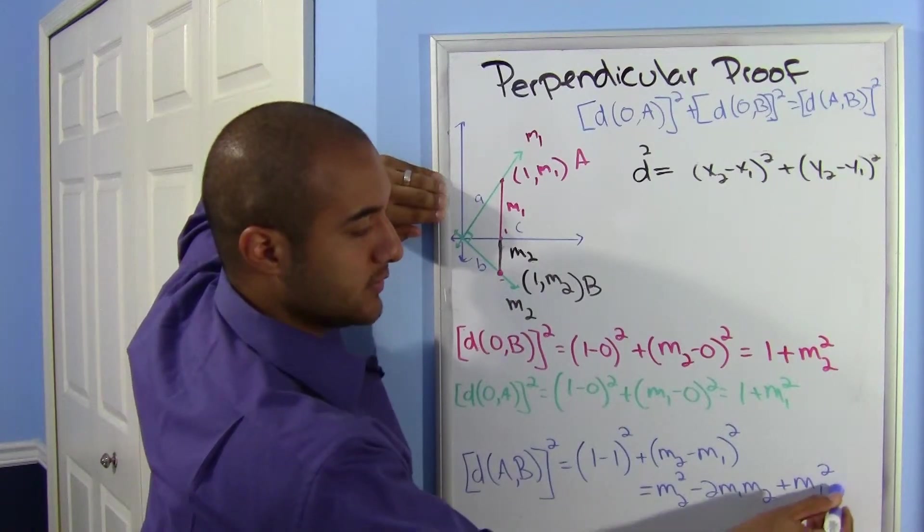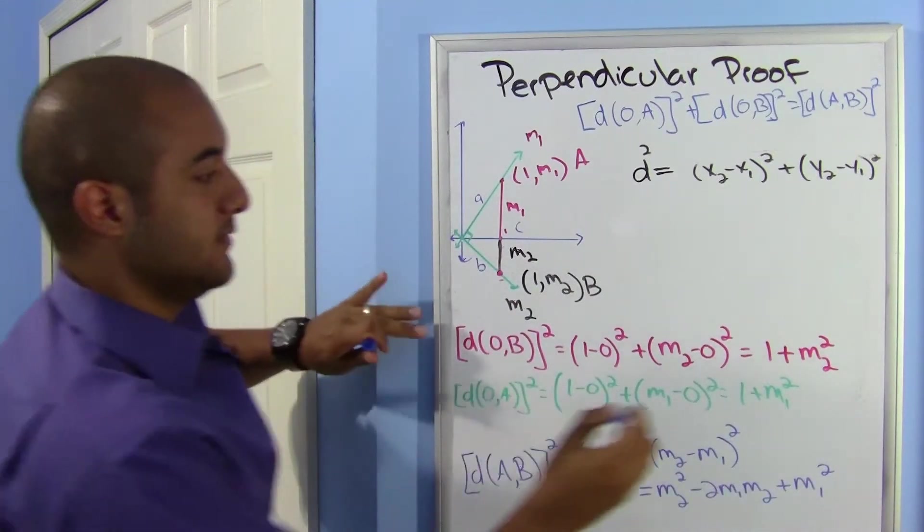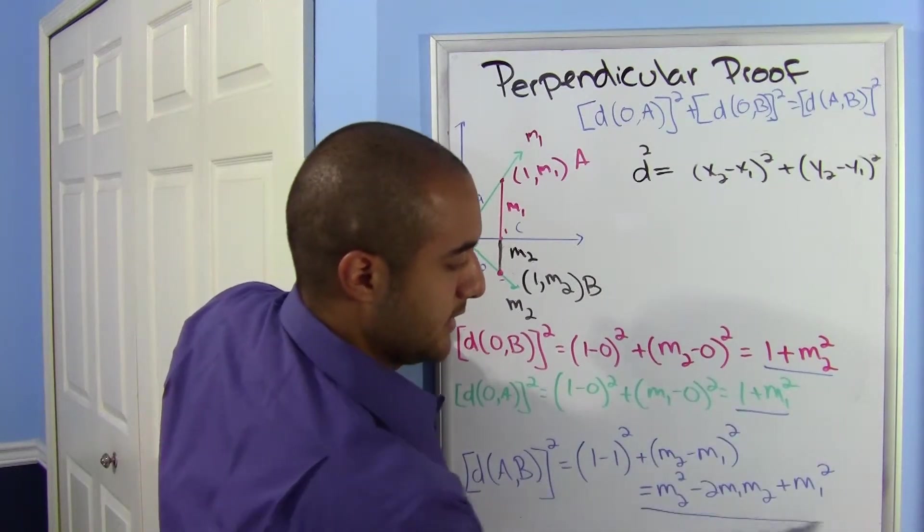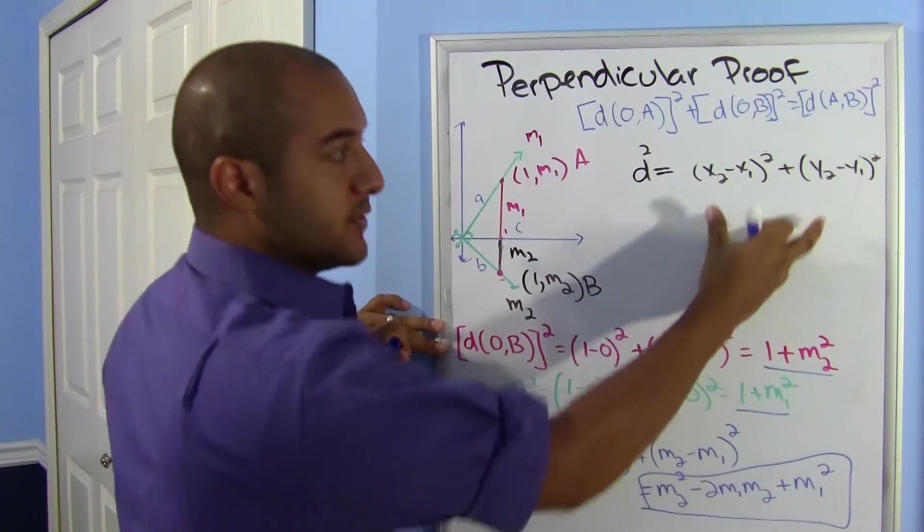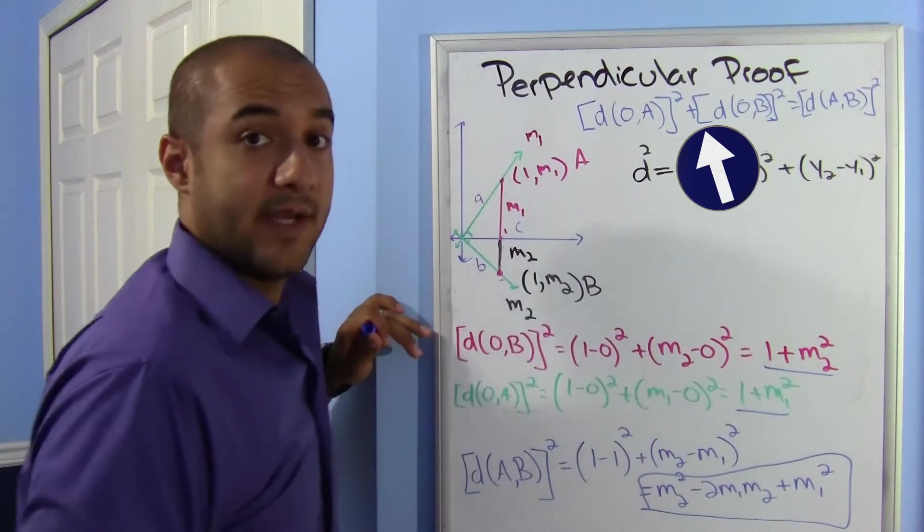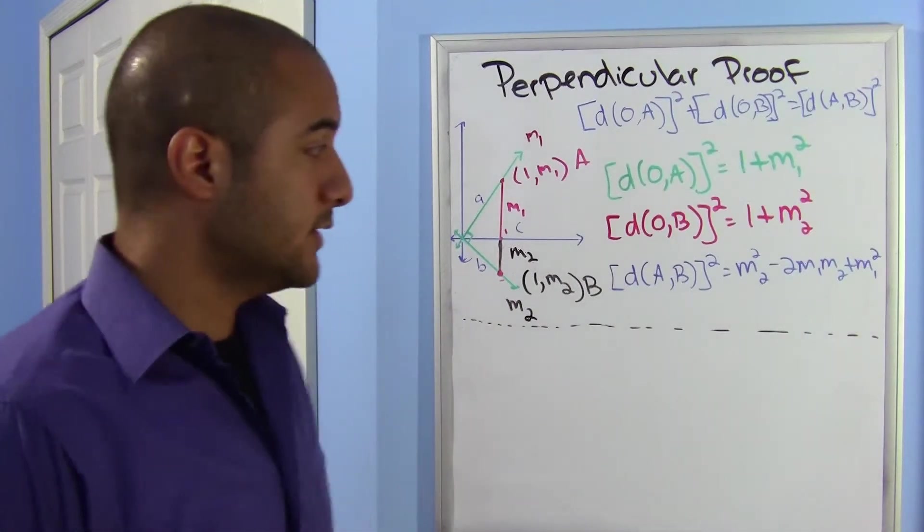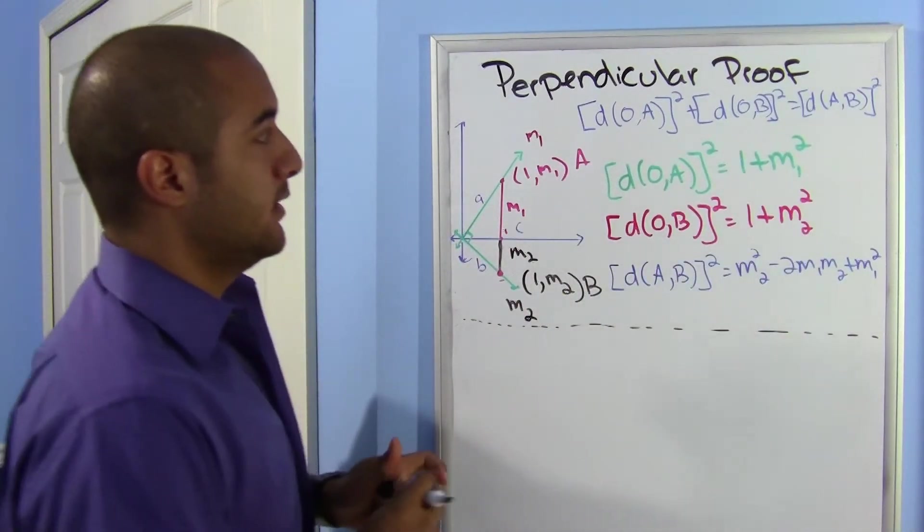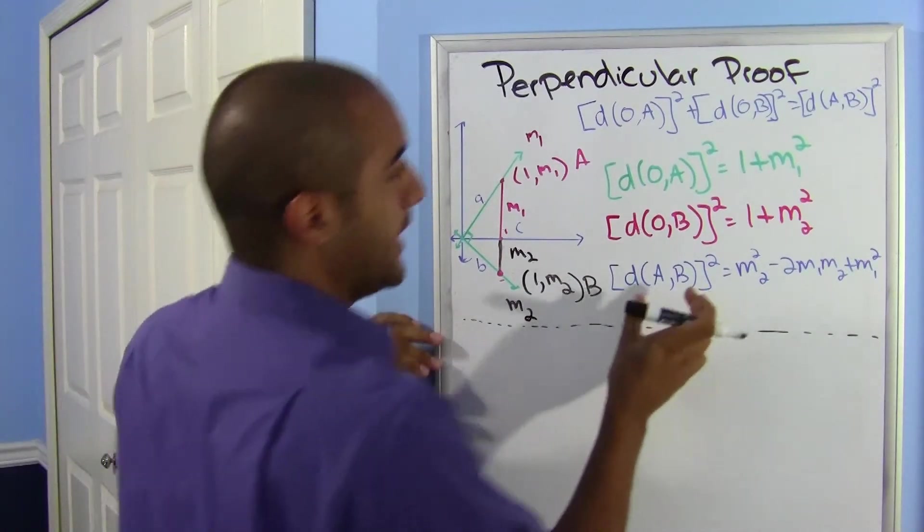Forgot squared—oh no I didn't, it's right there. So m2² - 2m1m2 + m1². So it is these three things that I now substitute in here. Okay, so let me erase this, and these three things will be my next substitution.